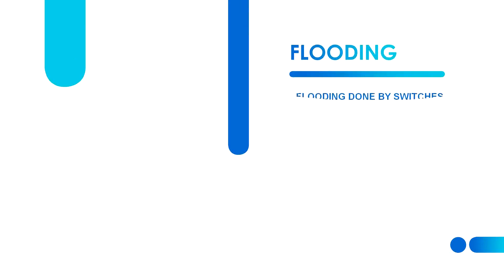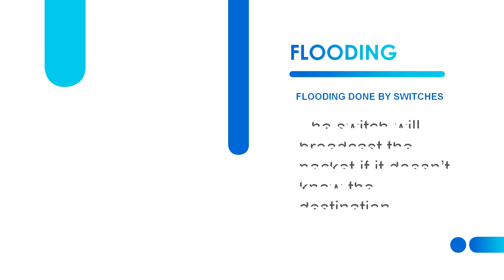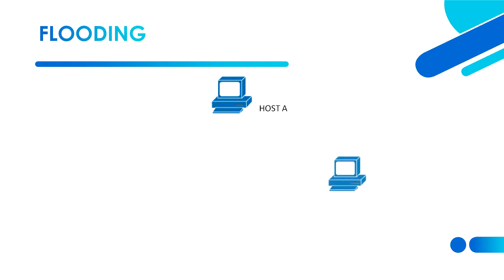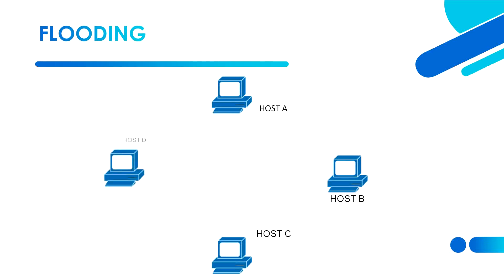Next is flooding done by switches. The switch will broadcast the packet if it does not know the destination. In this example network we have Host A, Host B, Host C, Host D, and a switch. There is a packet from Host A that wants to reach Host B.